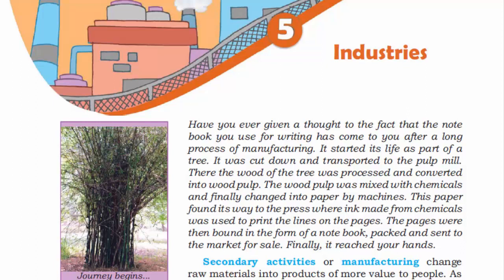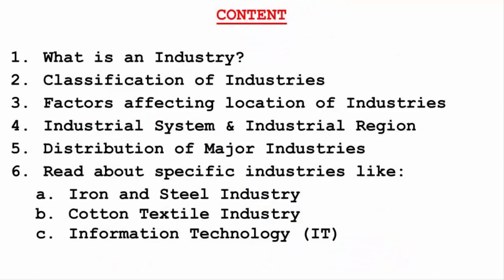These days our lives are much easier than before. I'm talking about cell phones, computers, lamps, electricity — and these changes have all been the effect of the industrial revolution. In this chapter we'll read about what is an industry, classification of industries, factors affecting location of industries, the industrial system, and industrial regions. Then we'll read about specific industries like iron and steel, cotton textile, and information technology. So with no further ado, let's begin.